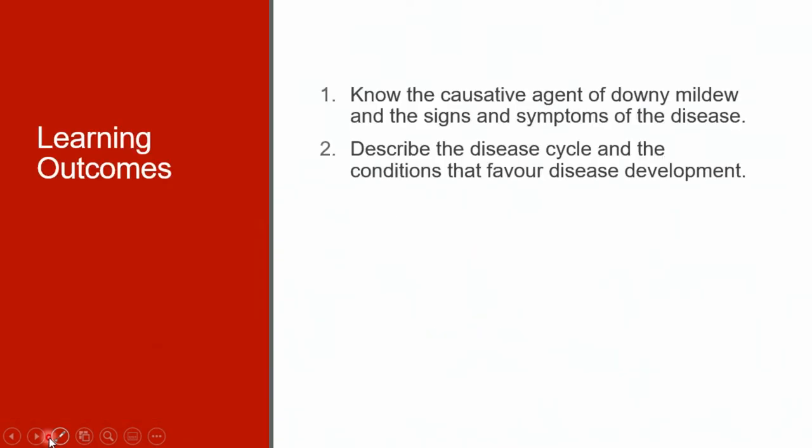The learning outcomes for this lecture are to know the causative agent of grape downy mildew, and you should be able to recognize the signs and symptoms of the disease. You should also be able to describe the disease cycle and the conditions that favor disease development.